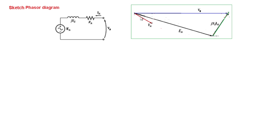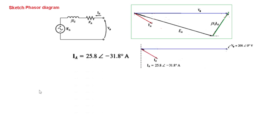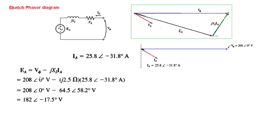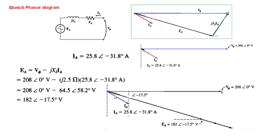Now we need to find E_a, the induced voltage or back EMF. Using the KVL formula and plugging in all known values — V_phase is 208, X_s is given, and the current has just been calculated — we find E_a equals 182 at angle −17.5 degrees. We can now plot E_a on the phasor diagram at −17.5 degrees with a magnitude of 182.